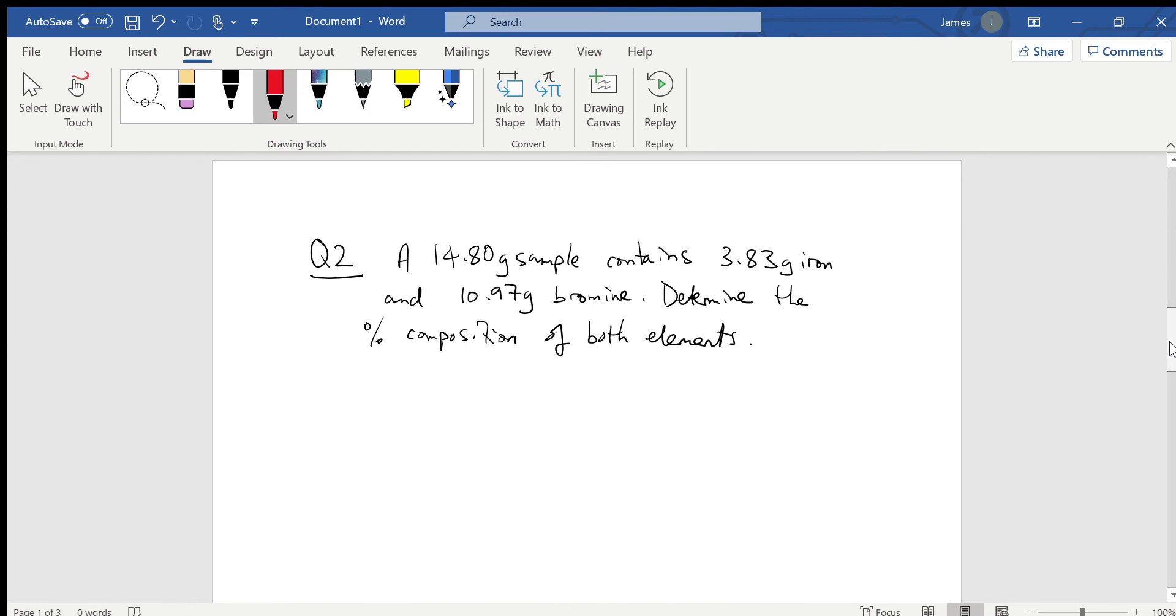Pretty straightforward. Let's look at another example. Question two reads: a 14.8 gram sample contains 3.83 grams of iron and 10.97 grams of bromine. Determine the percent composition of both elements. All right, so I'm going to find that question in my notes.